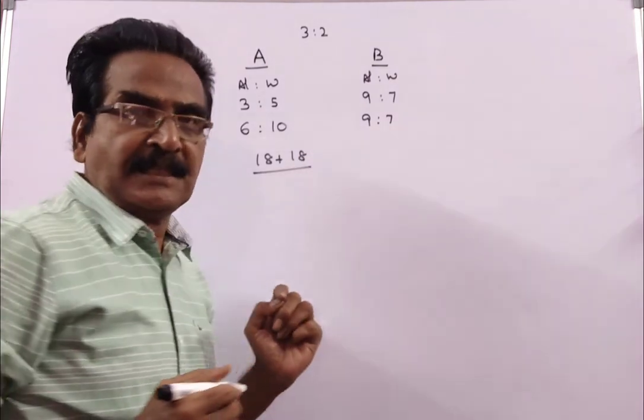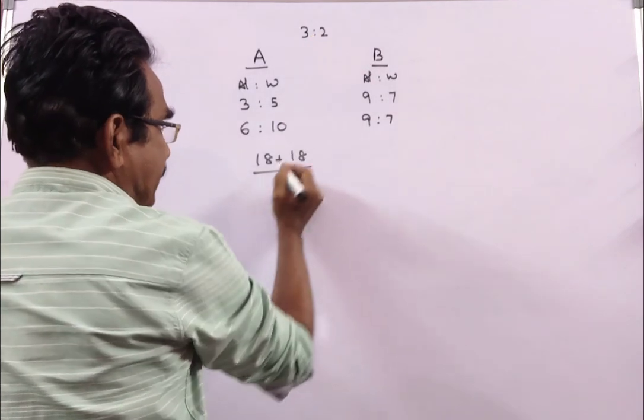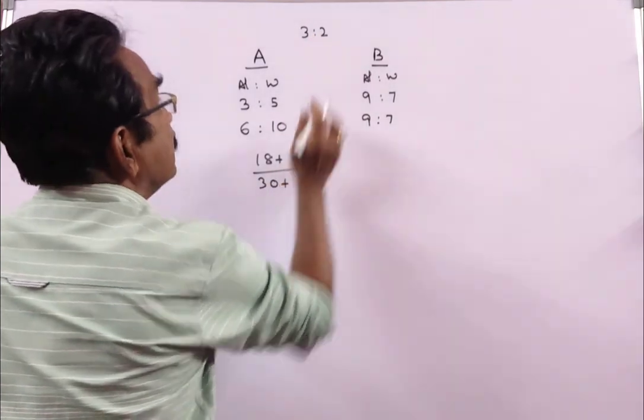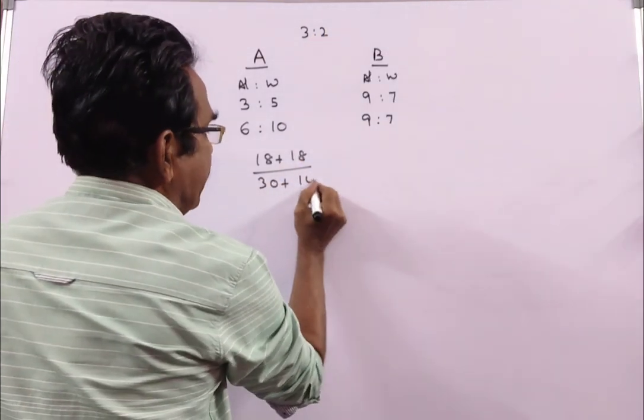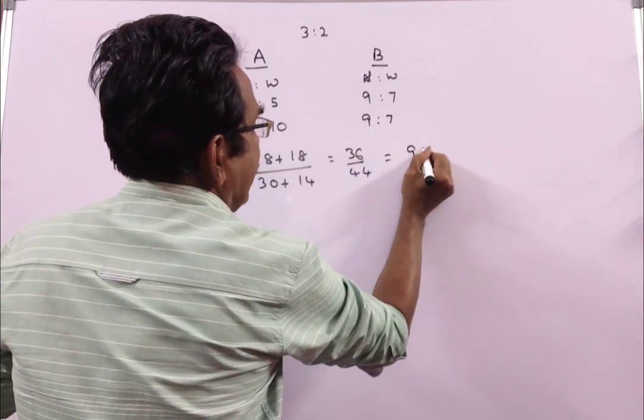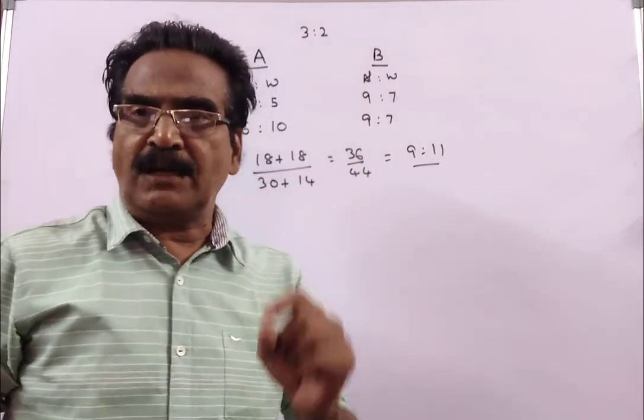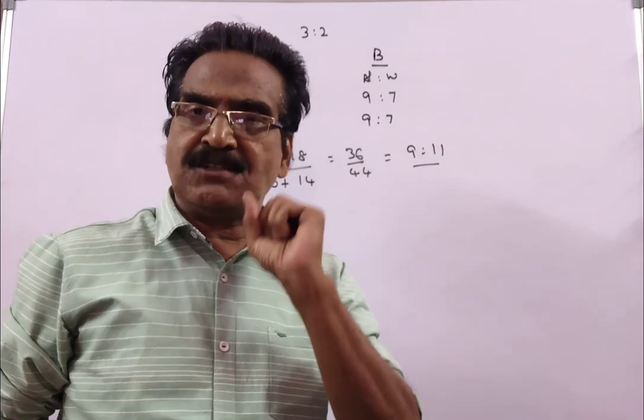This is the alcohol portion in the resultant solution. Coming to water solution, 3 times 10 is 30 plus 2 times 7 is 14. So 36 by 44, that is 9 to 11. The ratio of alcohol and water in the resultant solution is 9 is to 11 parts.